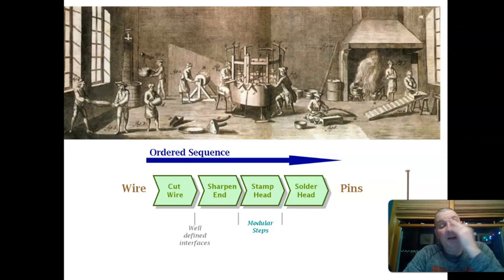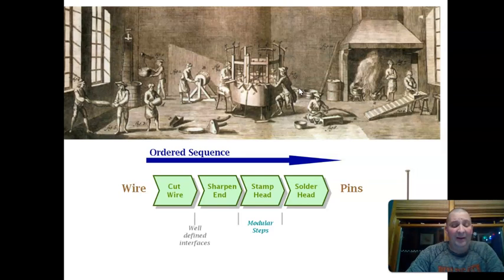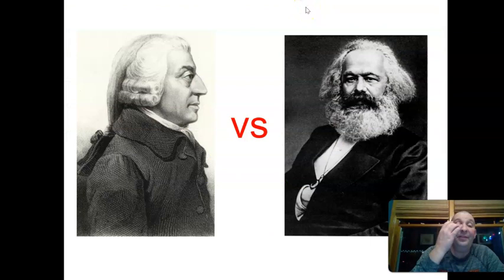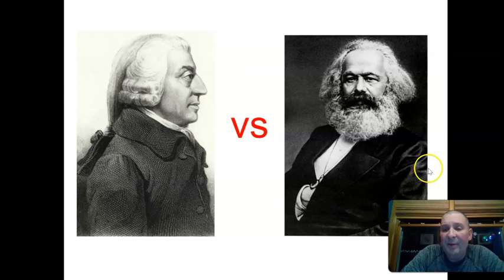We've gone through agricultural developments, technological developments, and economic developments — this is the Industrial Revolution, the crux of what happened first in England and then transferred to the continent. This ultimately sets up a showdown between Adam Smith and one of the best sets of facial hair we'll see — we'll meet Karl Marx just after break. Thank you for following along. You guys are rock stars. We'll touch base next time.